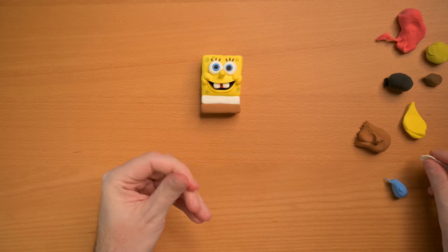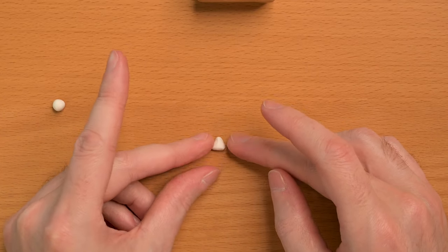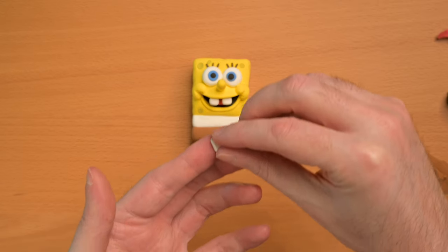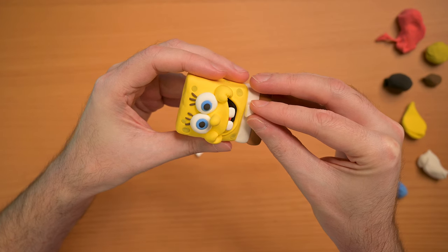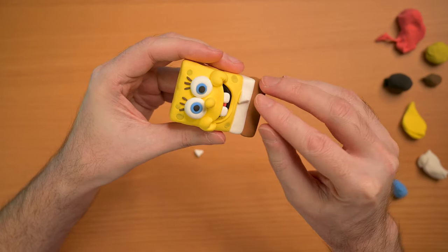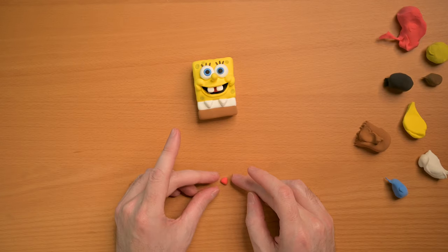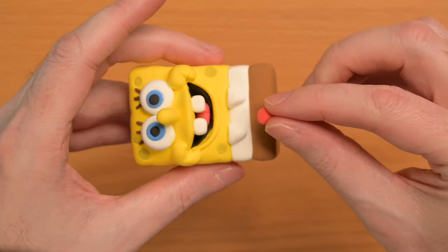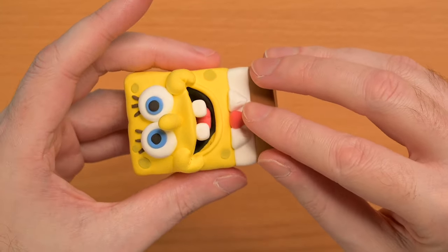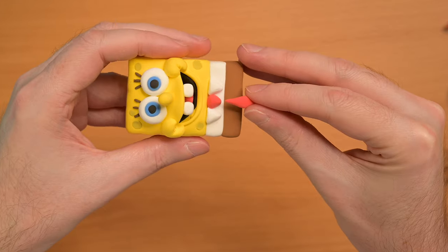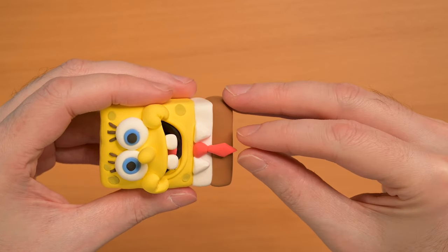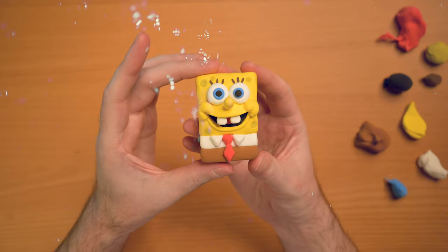Now we're going to add some collar details on his shirt. He's an astute businessman. We're going to make sure he looks nice. He's got a little tie, of course. And we're going to place that right on there. Oh, look at him. He looks so professional. I love it.